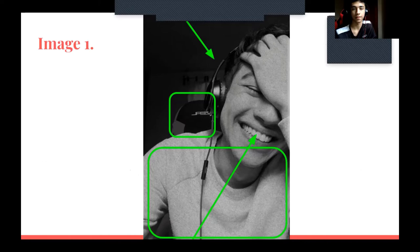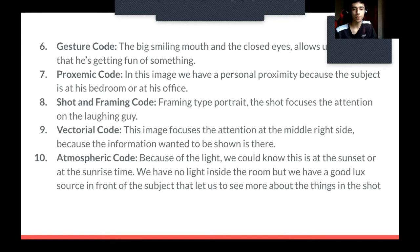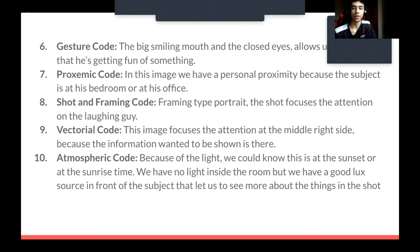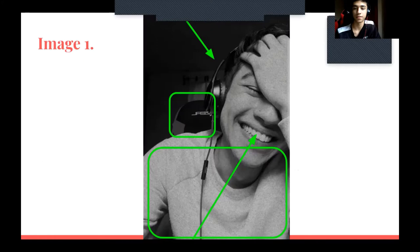The ninth is the victorial code — this image focuses attention at the middle right side because that's where the information we want to show is located. The tenth is the atmospheric code — because of the light, we could know this is sunset or sunrise time. There is no light inside the room, but there are a couple of light sources in front of the subject that let us see more things in the frame.